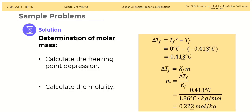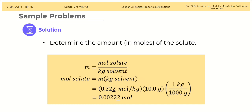For the calculation of the molar mass, calculate the freezing point depression. Subtract the freezing point of the solution from that of the solvent. The difference gives us the freezing point depression, which is 0.413 degrees Celsius. Next, calculate the molality from the freezing point depression and the Kf value. Plugging in the values, we obtain 0.222 moles per kilogram. The amount in moles of the solute is 0.0022 moles.